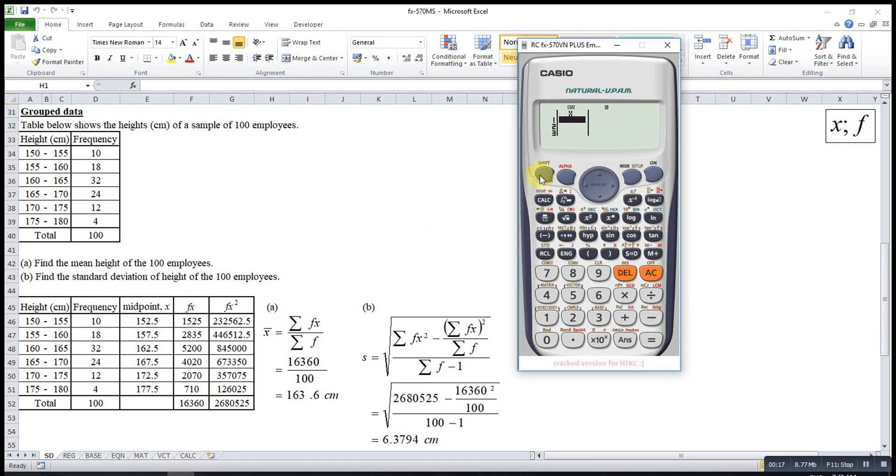To turn the frequency column to on, we press shift mode. Then down. We choose step 4. Then frequency on, 1. So we have a column for frequency.